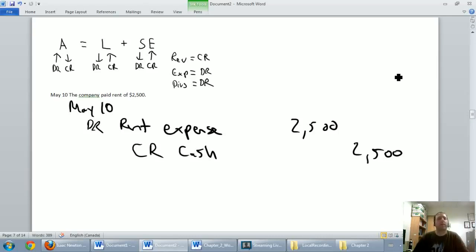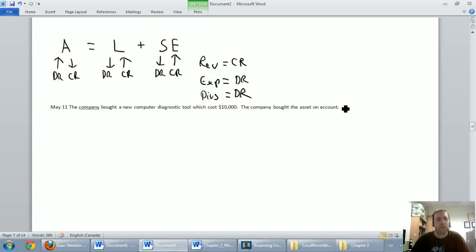Okay, so we've just completed our May 10th transaction. Time to move on to the next one. May 11th, the company bought a new computer diagnostic tool which cost $10,000. The company bought the asset on account. There's that magic word again. We bought something on account. That means we bought something but we didn't pay for it.